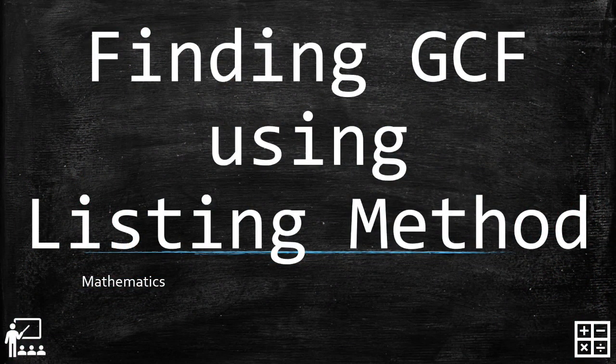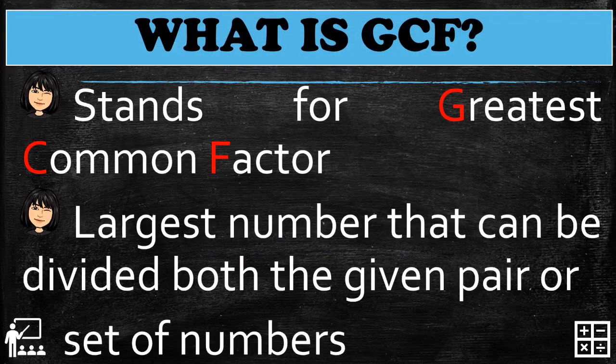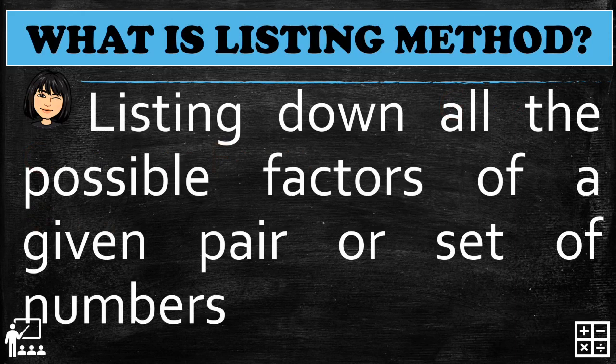This video lesson is about finding GCF using the listing method. GCF stands for Greatest Common Factor — it is the largest number that can divide both the given pair or set of numbers. The listing method means listing down all the possible factors of a given pair or set of numbers.